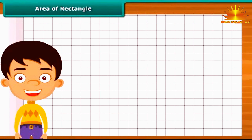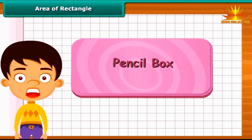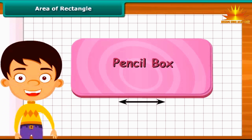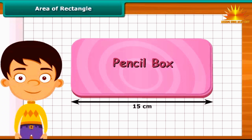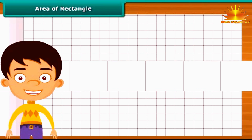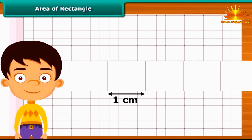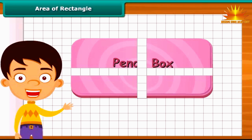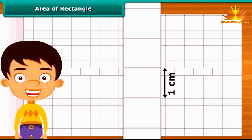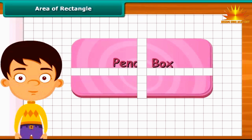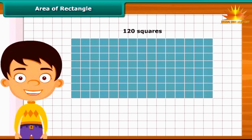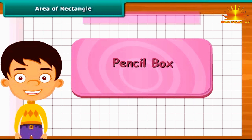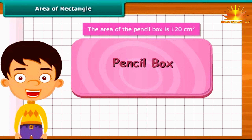Let us find the area of a rectangle by counting squares. Take a rectangular pencil box and place it on squared paper. The length of the box is 15 centimeters. Arrange 15 squares of side 1 centimeter along its length. The breadth of the box is 8 centimeters. Arrange 8 squares of side 1 centimeter along its breadth. Altogether, 120 squares have been arranged on the squared paper, meaning the area of the pencil box is 120 square centimeters.